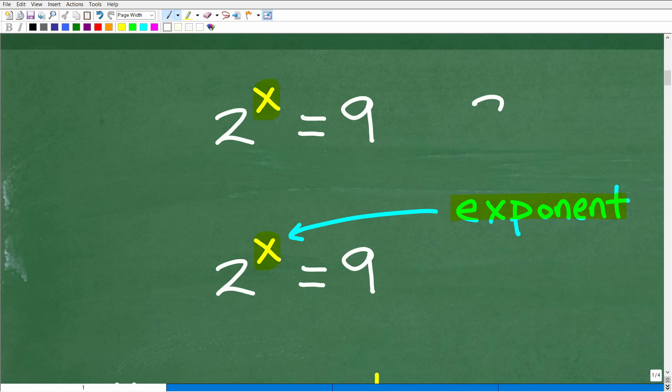So when we have a power like 2 to the 4th power, 2 is the base, right? This is just a quick review. And this little 4 up here is the exponent. The entire thing is a power. But here, we have to distinguish this equation 2 to the x power is equal to 9 versus, let's just kind of flip the variable and base position here.